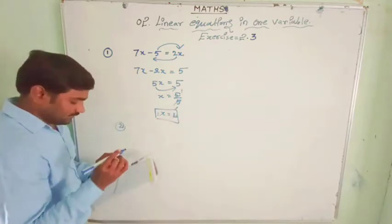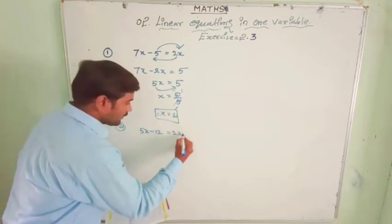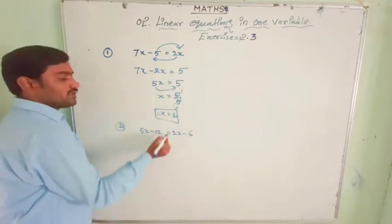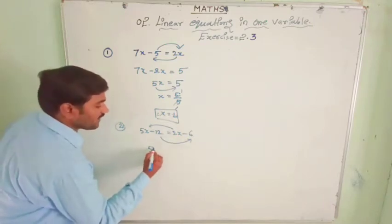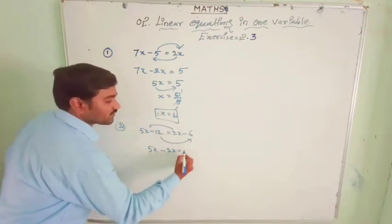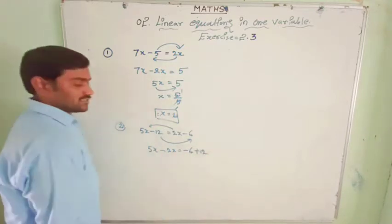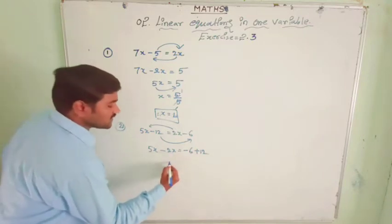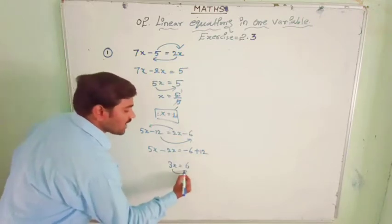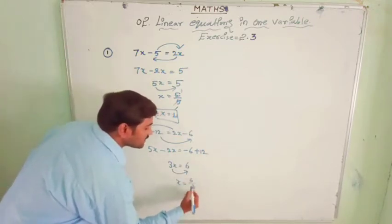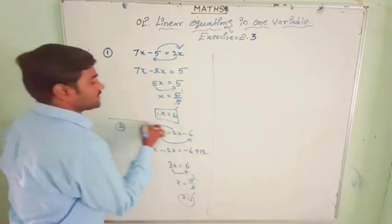The 2nd question: 5x minus 12 equal to 2x minus 6. Variables will go to one side and constant numbers will be on one side. 5x minus 2x equals 3x, and minus 12 becomes plus 12 on the other side. So 3x equal to 12 minus 6 is 6. Therefore x equal to 6 by 3, which gives x equal to 2.